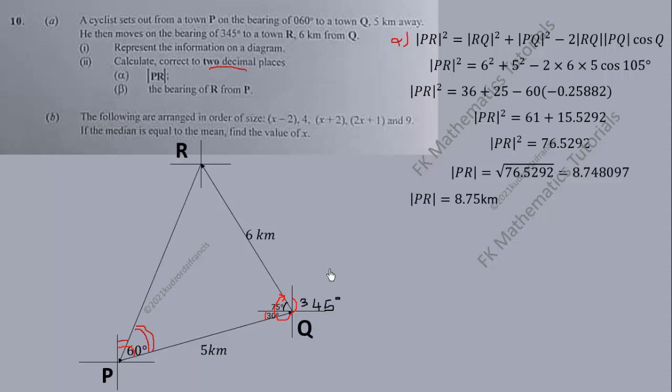According to the sine rule, the proportion of the sine of the angle over the opposite side are always equal. So sine of P, that is sine of this angle, sine of angle P over 6 is equal to sine of angle Q, which is sine of 105 over PR.